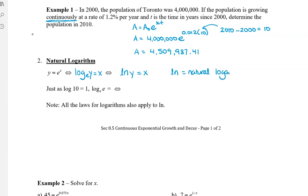So the ln is called the natural logarithm. Some people just call it ln just because they don't want to say natural logarithm. So just as we know that log 10 is 1, log e with a base of e is 1, and then the natural log of e equals 1. So all the laws for the logarithms that we already know also apply to the natural logarithm. Let's take a look at some examples.